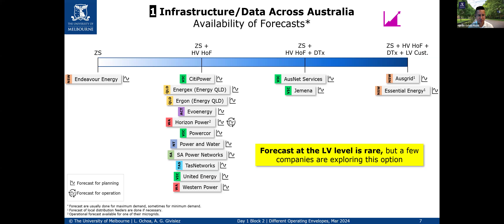In terms of forecasts, as you'd expect, there are forecasts happening significantly at the zone substation and per high-voltage feeder level — aggregating thousands of customers. Some companies are incorporating forecasts at the distribution transformer level, particularly those with smart meter data. But you can see it is very rare. Most companies, if they do forecasts, stop at the head of the high-voltage feeder. That's normal and common worldwide, but it means forecasting is something we need to prepare for if we're going to implement operating envelopes.